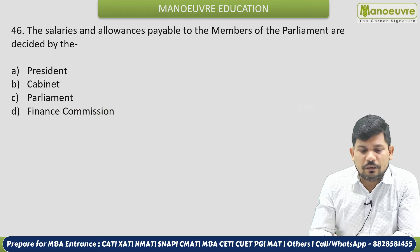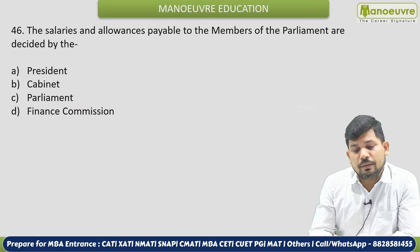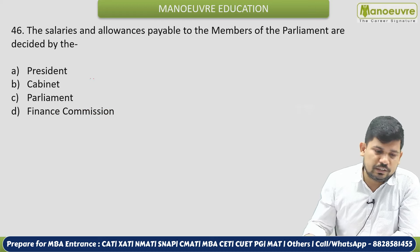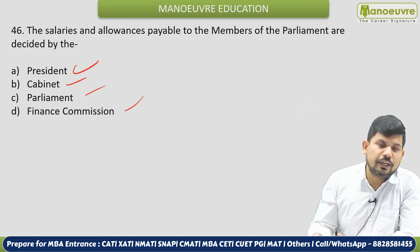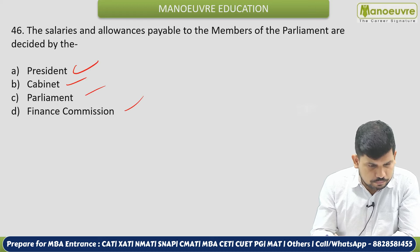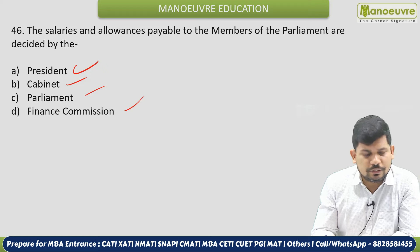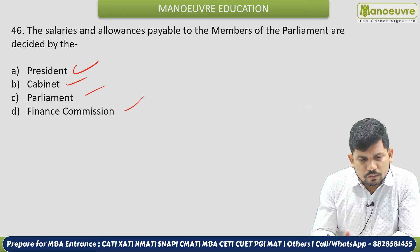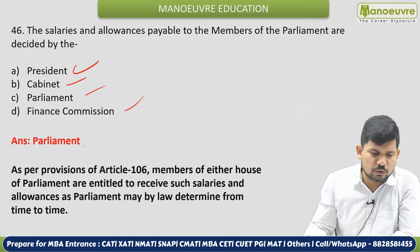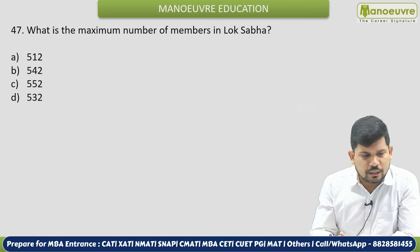Next: The salary and allowances payable to members of Parliament are decided by whom — President, Cabinet, Parliament, or Finance Commission? The correct answer is Parliament. Parliament decides the allowances and payments for members of Parliament.